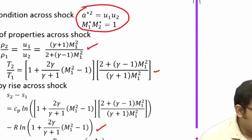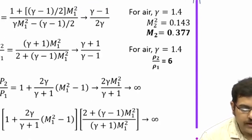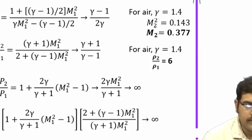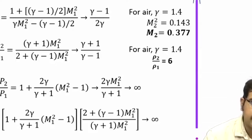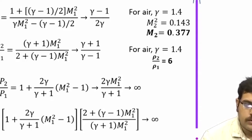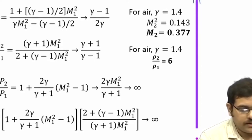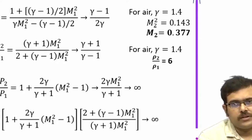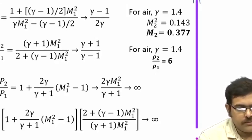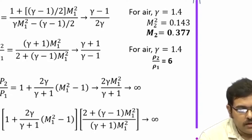Now with this information, let us look at the limiting conditions for the shock wave. One thing is clear: the characteristics of the shock depend only on the upstream Mach number and gamma. If the upstream Mach number is increased continuously, the strength of the shock — generally referred to as the pressure ratio — increases significantly. Let us see what happens if Mach number tends to infinity; this limit is known as the strong shock limit because the pressure ratio can become really high.